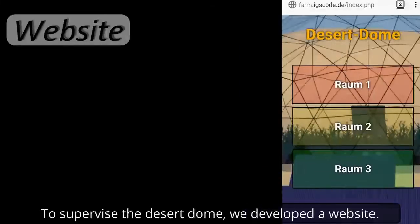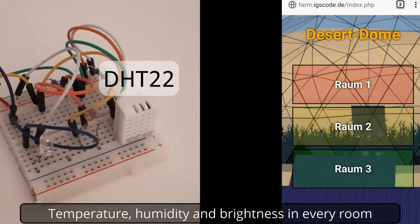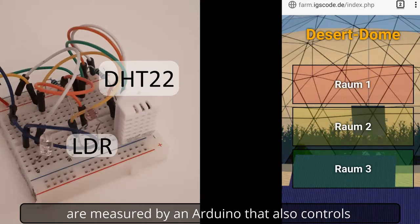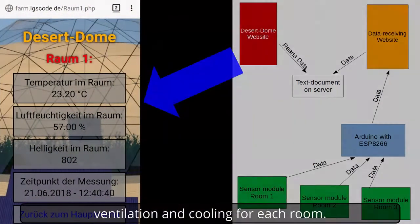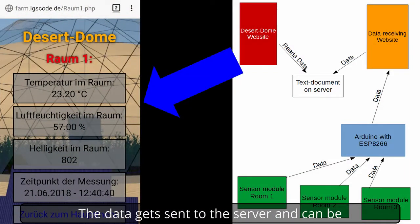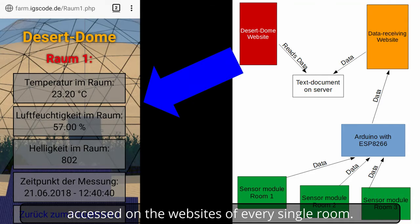To supervise the desert dome we developed a website. Temperature, humidity and brightness in every room are measured by an Arduino that also controls ventilation and cooling for each room. The data gets sent to the server and can be accessed on the website for every single room.